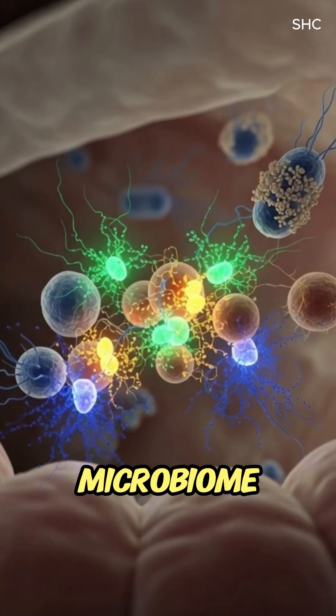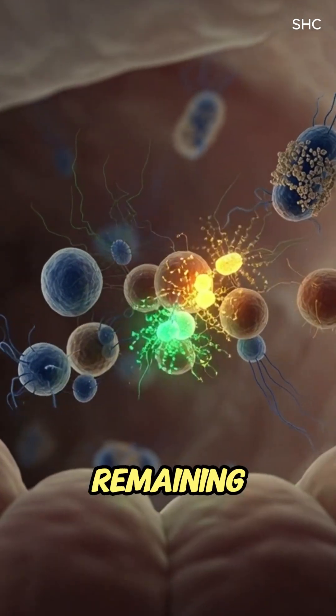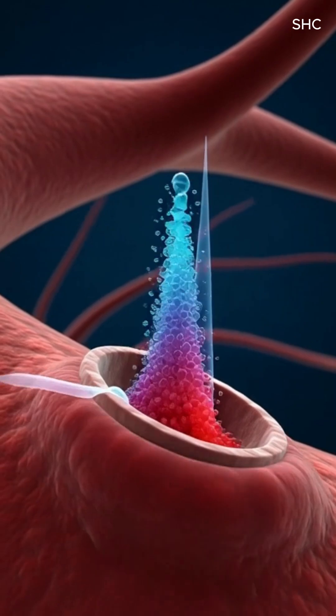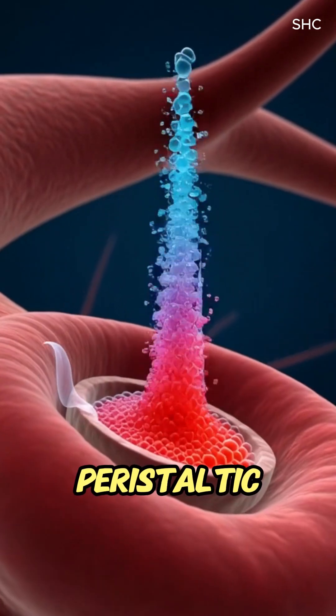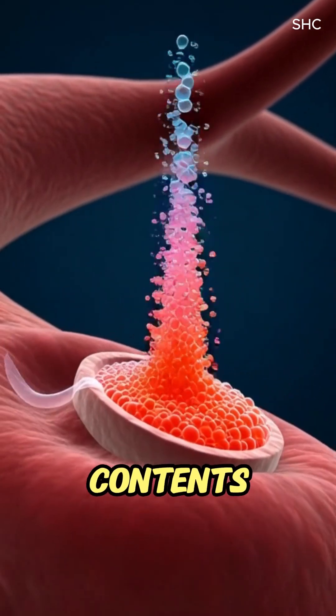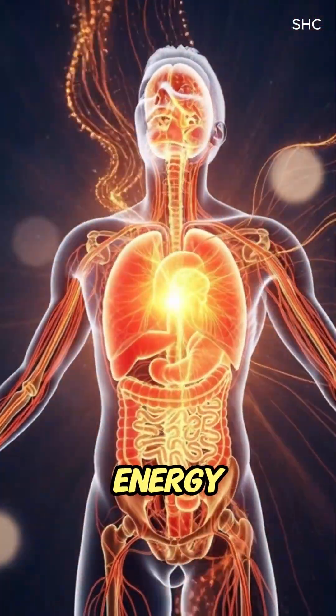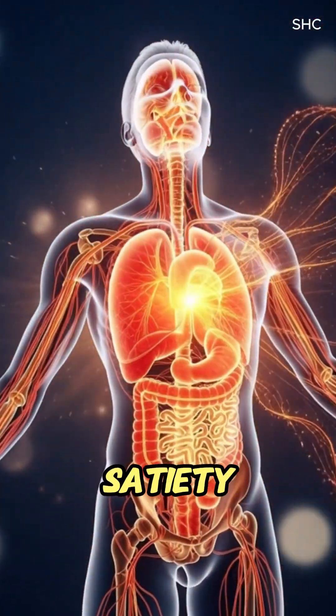The gut's microbiome interacts with fibers and remaining sugars, producing beneficial metabolites. Throughout, peristaltic waves continue moving contents, optimizing nutrient delivery and supporting energy, focus and mild satiety.